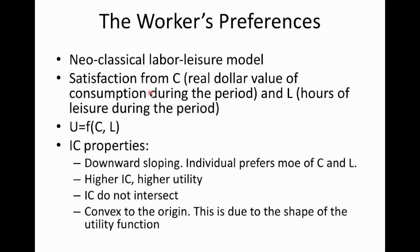In this model, the utility derived by a particular worker is a function of his or her consumption expenditure and leisure hours. To quickly revisit some properties of the indifference curve model: the indifference curve is a downward-sloping curve; individuals prefer more of both consumption and leisure; a higher indifference curve indicates a higher level of utility because in indifference curve analysis we have an indifference map; and indifference curves do not intersect.